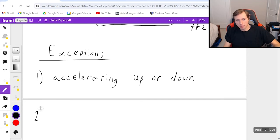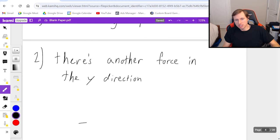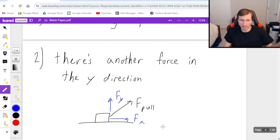The second exception is if there's another force in the Y direction. So for instance, if I have a box here and I'm pulling up at an angle like this, it doesn't matter what the angle is because you would need to break this F pull into its X and Y components anyway. So you'd have Fx and an Fy, an X and Y component. You do that using SOHCAHTOA.